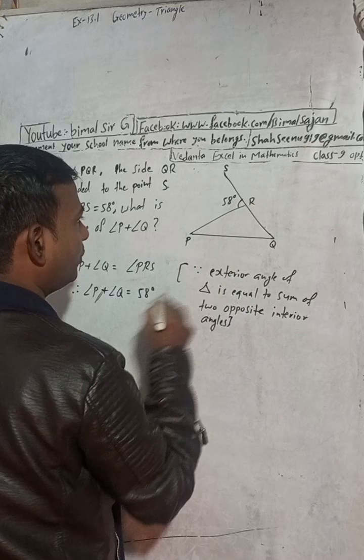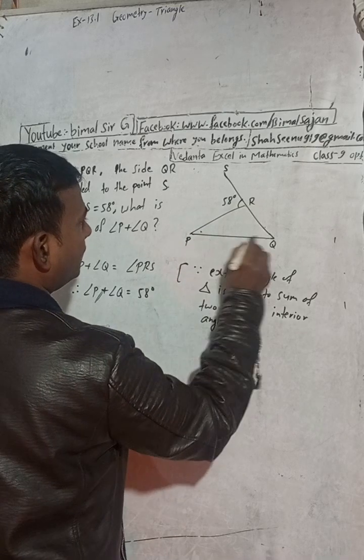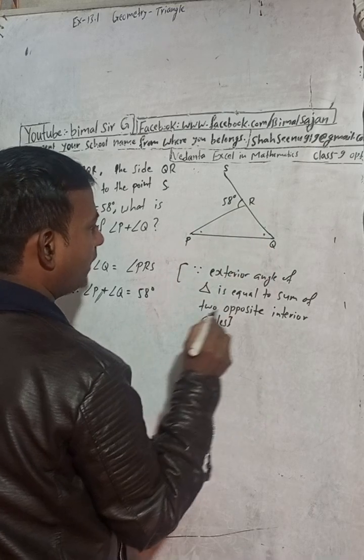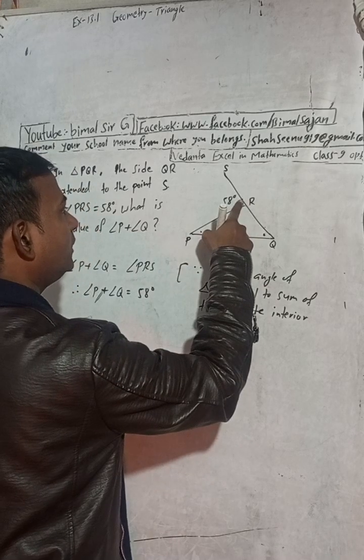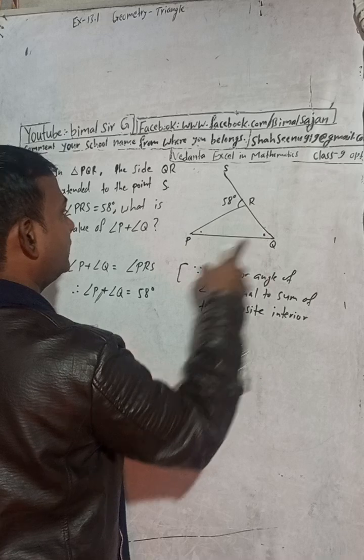This is opposite, and this is two opposite interior angles. So this exterior angle is equal to sum of this and this angle, that is P and Q. So this is the solution.